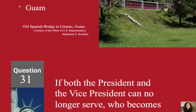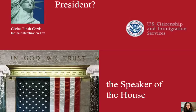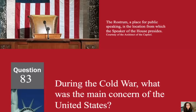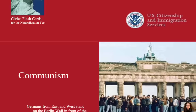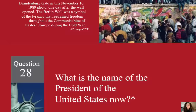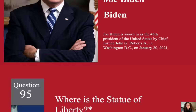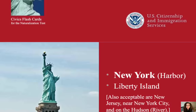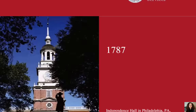If both the president and the vice president can no longer serve, who becomes president? The Speaker of the House. During the Cold War, what was the main concern of the United States? Communism. What is the name of the president of the United States now? Biden. Where is the Statue of Liberty? New York. When was the Constitution written? 1787.